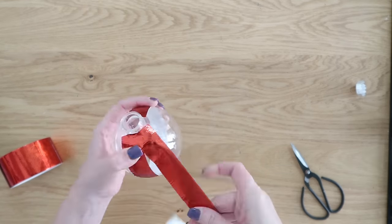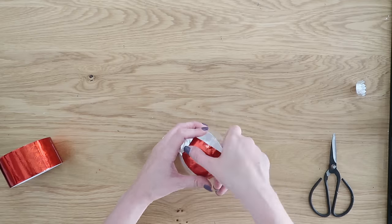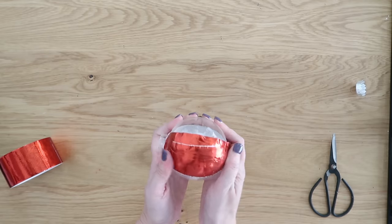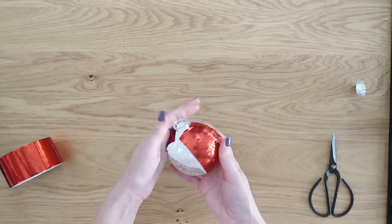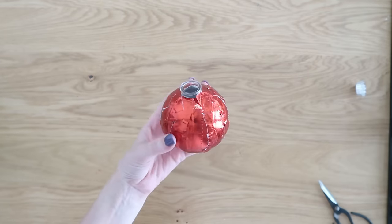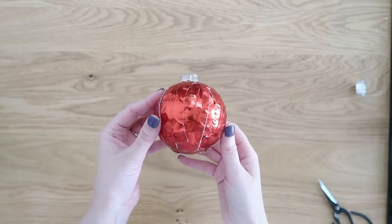Then you're going to cover your ornament with the duct tape going from one side to the other. Any excess, keep because we're going to use that to fill holes. Kind of offset the next piece going from top and then filling in the holes with that extra tape we had left over. Then you'll continue this process until your entire ornament is covered.